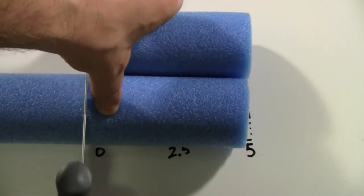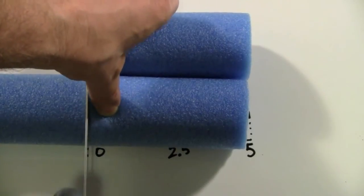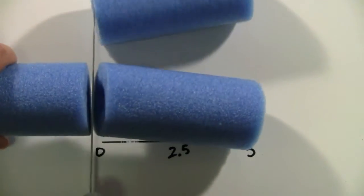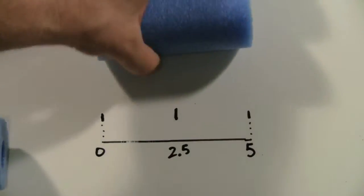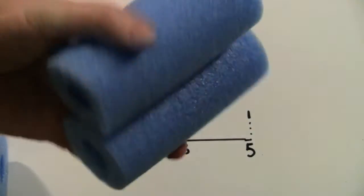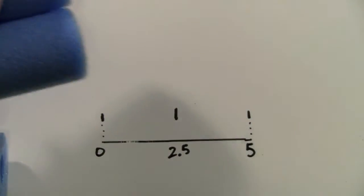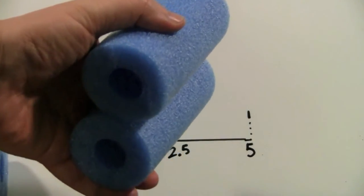We'll try to get these exactly the same size. Cut through pool noodle number two and trim the little bottom piece so we don't scratch anything. Now we've got our two pieces of pool noodle.